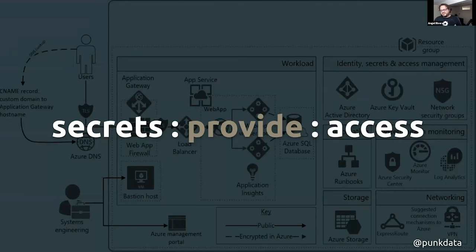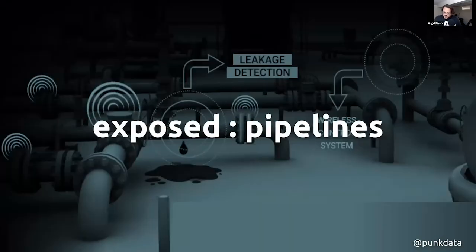Secrets provide access to databases, APIs, and systems you're trying to connect to. They are sensitive information and you definitely want to have them protected. People have unprotected secrets all the time within their pipelines, and of course if you have that situation, you're basically exposing yourself to unwanted attacks.